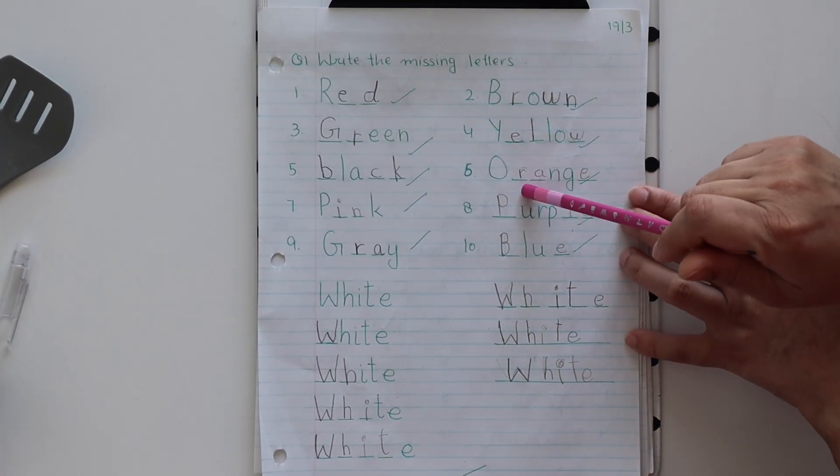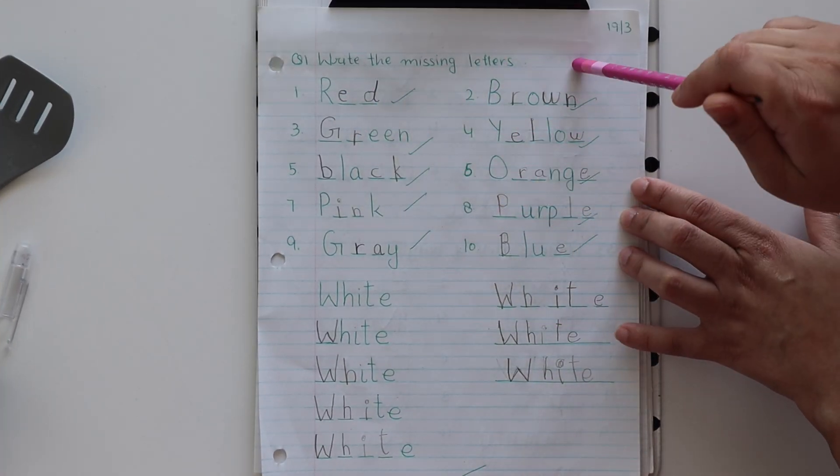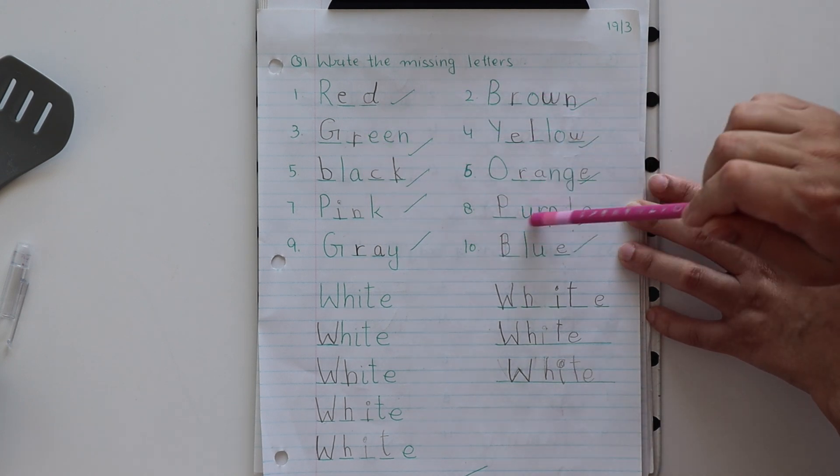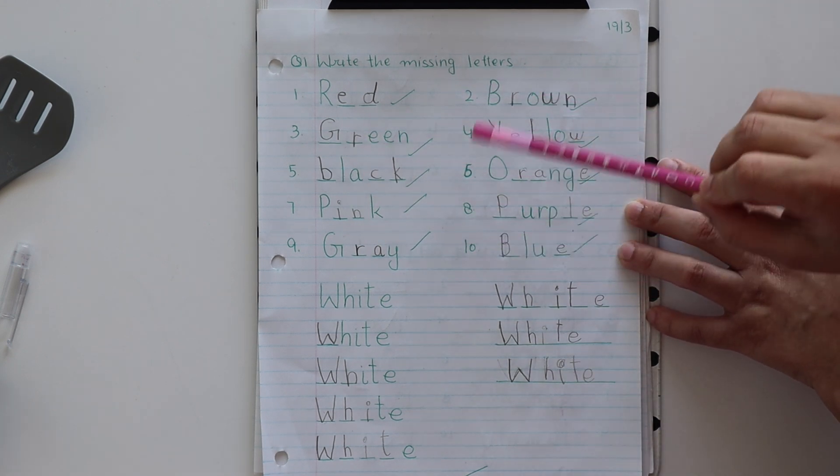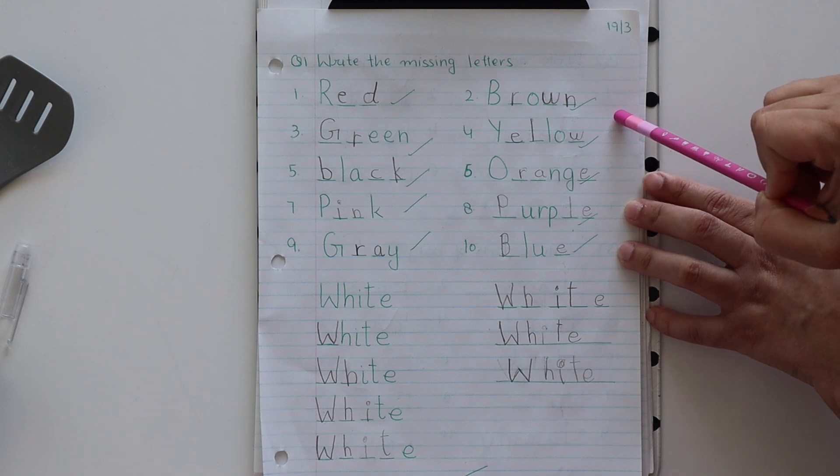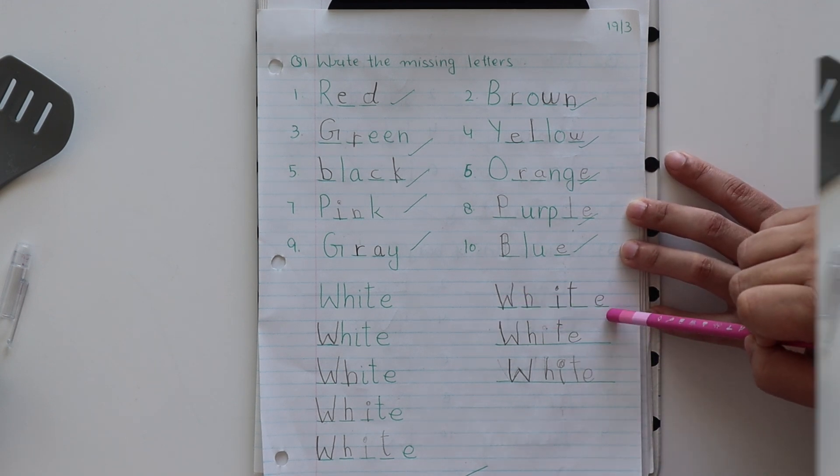So for first worksheet as you can see, it's write the missing letters. She already knows the spelling of all these ten color names. So that's why I gave her missing letter worksheet. And today we practiced the color name white.